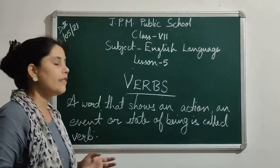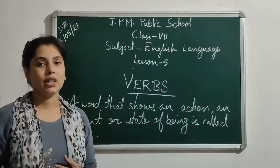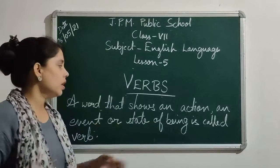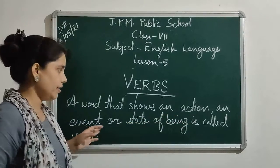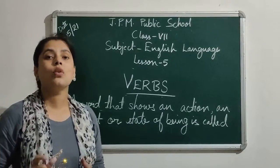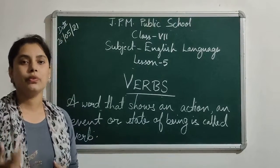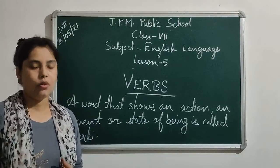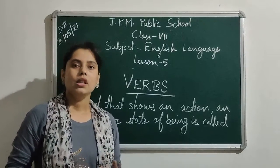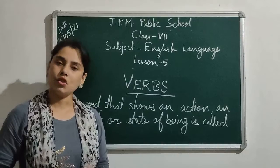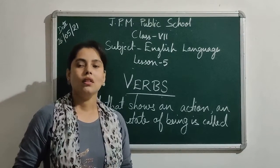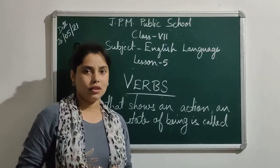As you can see, from this definition it is very clear that the words which show action, events, or state of being of a person are known as verbs. Verbs can be of different types. Verbs can be main or auxiliary verbs, and transitive and intransitive verbs. Now we will study about main and auxiliary verbs.